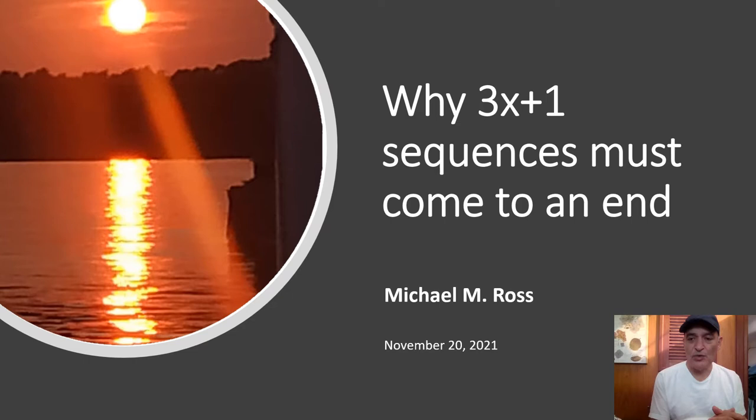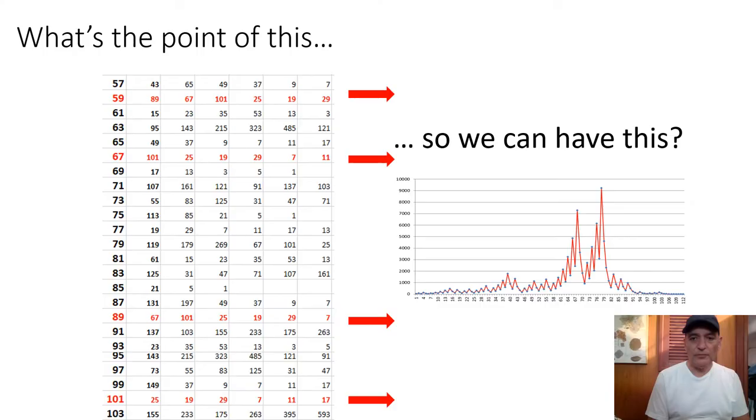For the 3x+1 function to diverge from any given number, except 1, would be impossible - and I know mathematicians don't like to hear this word - because there is no inverse operation. When you see numbers increasing in sequences, that's not steps, that's just numbers increasing. The step count of sequences is going down with every operation, no matter what that operation is doing to the numbers. Eventually the sequence will return to 1 because the steps will be exhausted.